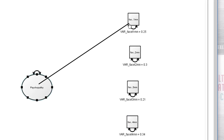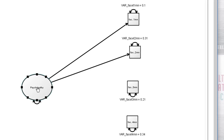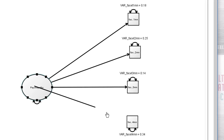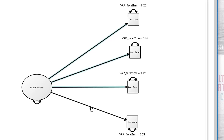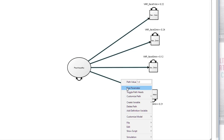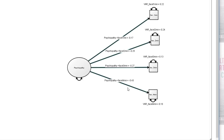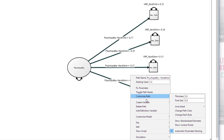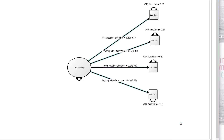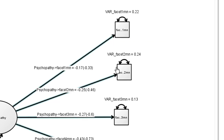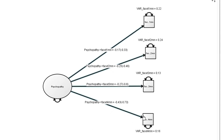Right-mouse click and drag to create each of the four regression paths, or factor loadings. We want all these to be estimated, so click the first one, hold down shift, select the next three, right-mouse click and say Free Parameter. It would also be nice to see the standardized scores, so while we've got them selected, choose Customized Path and Show Standardized Estimates. We also have R-squared values if we hover over each variable with the cursor.